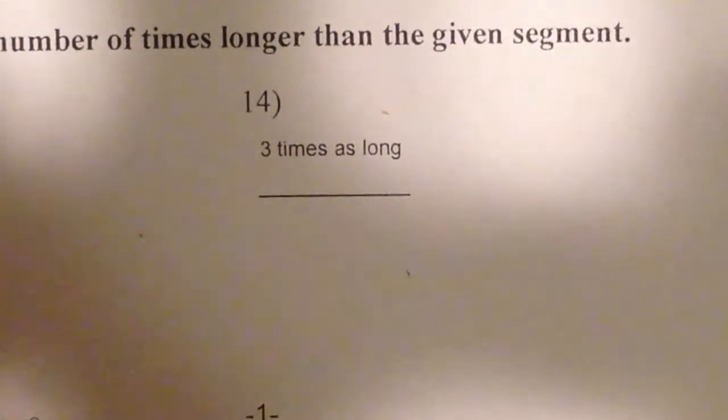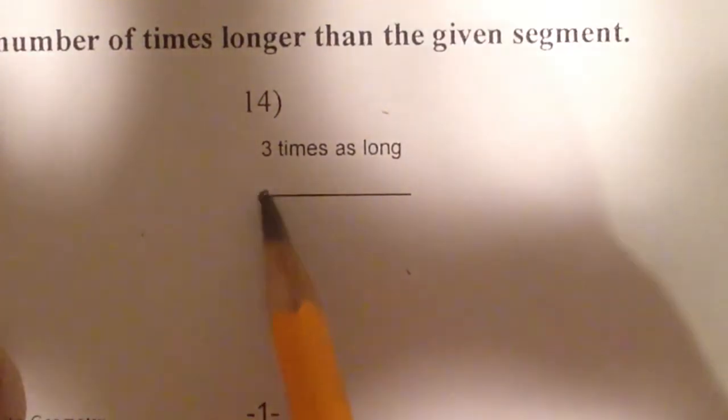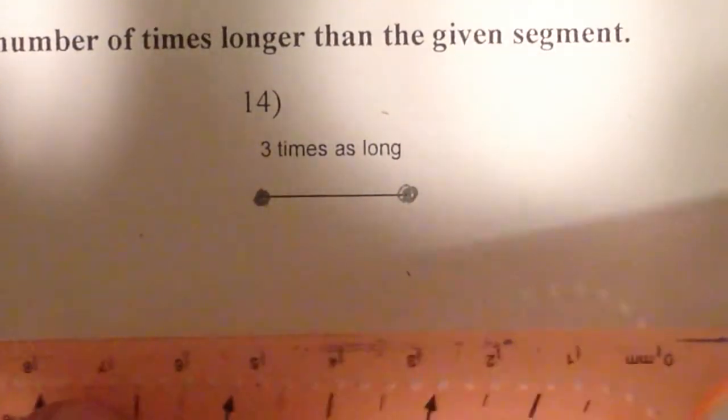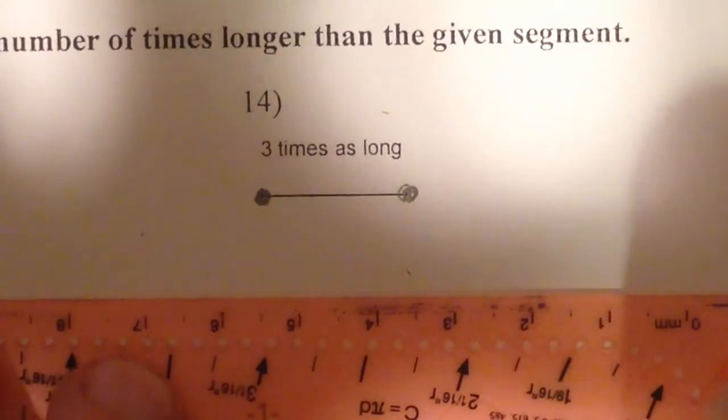For this last example, we're going to make a construction where we take this line segment here with these two dots, and we're going to turn it into something that's three times as long. Really, all that means is just doing three copies, so I'm going to do this one the standard way now.